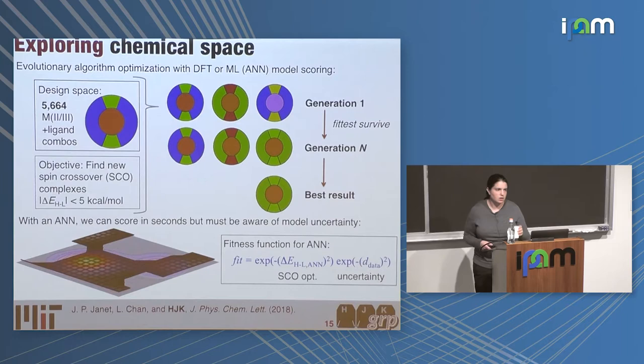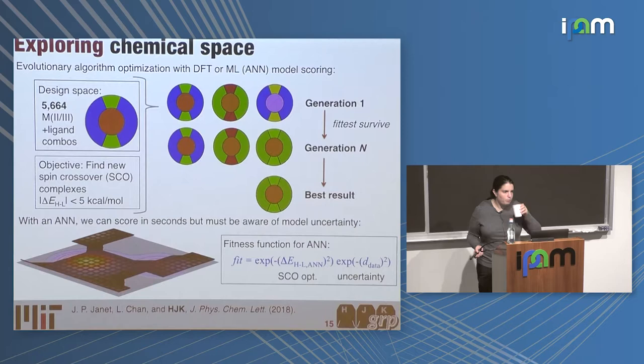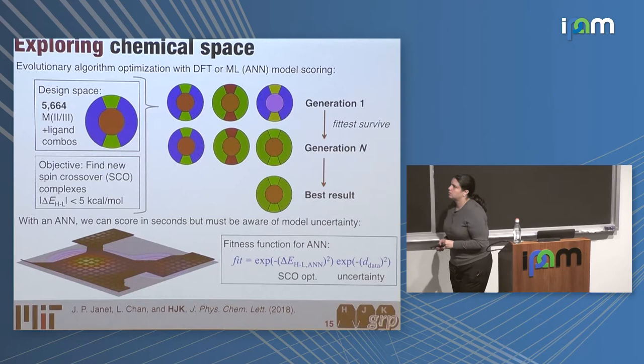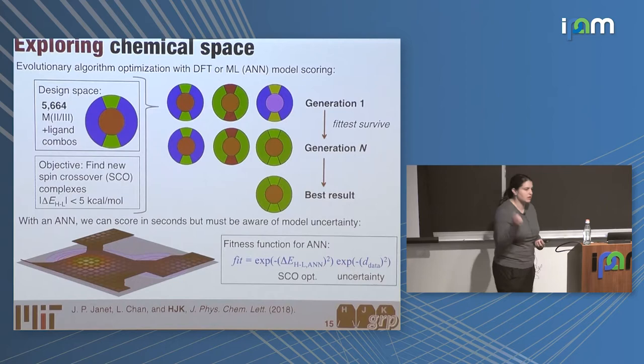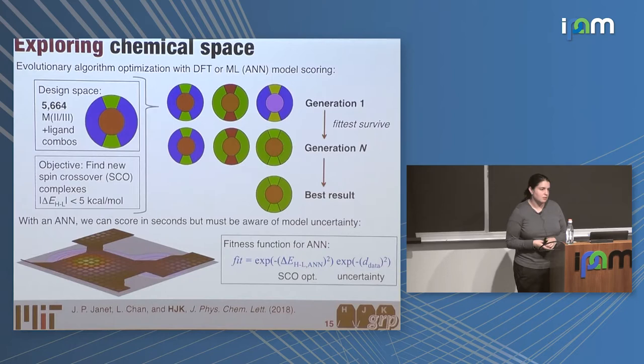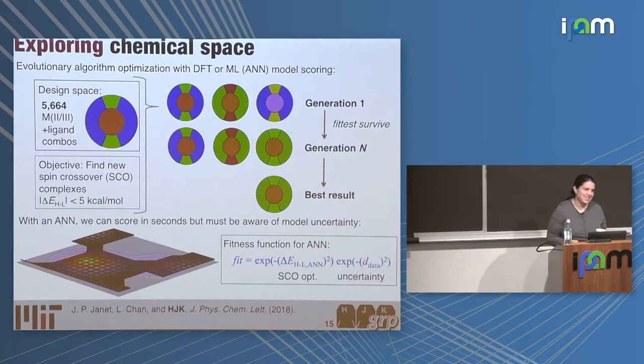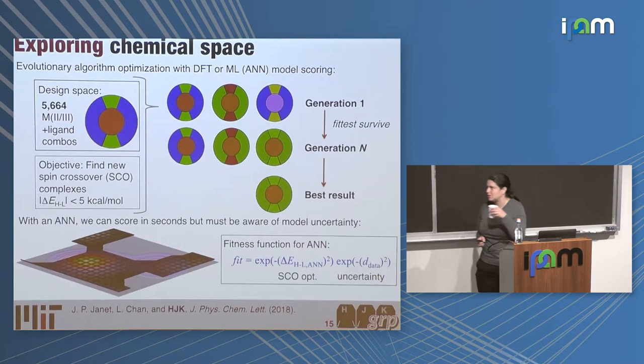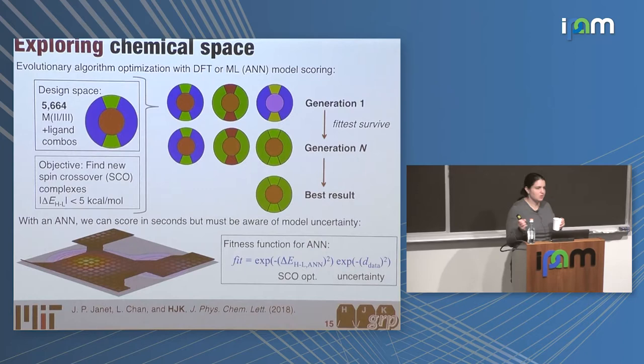[Audience question: "Your design space here is only thousands of molecules?"] In this particular toy application, because we wanted to easily enumerate and visualize the space, our current application spaces are a few million. This work was actually a high school student summer project — Lydia Chan, now an undergrad at Stanford — and we didn't have seven years to wait. With 5,000 molecules, DFT takes about seven years of CPU time. The point was we could get leads in seconds with the neural net. What we were working towards was a paradigm of switching between ML predictions and DFT predictions, benchmarking the two side by side, so we kept the design space modest.